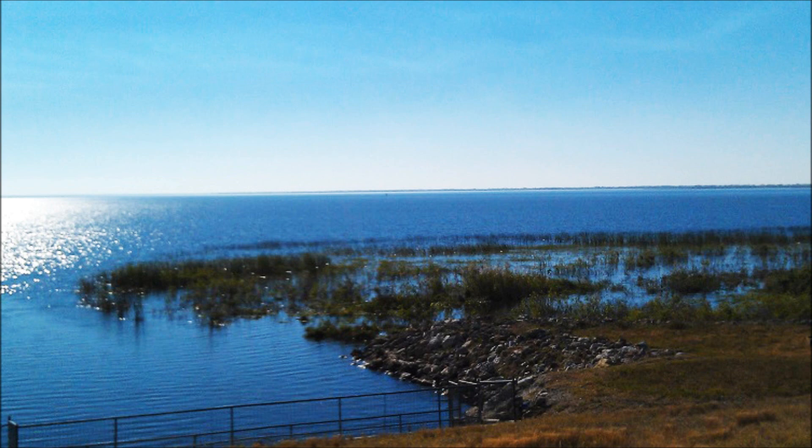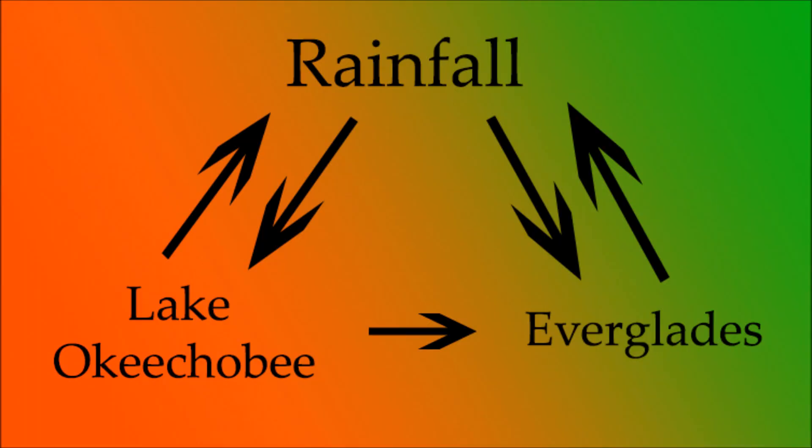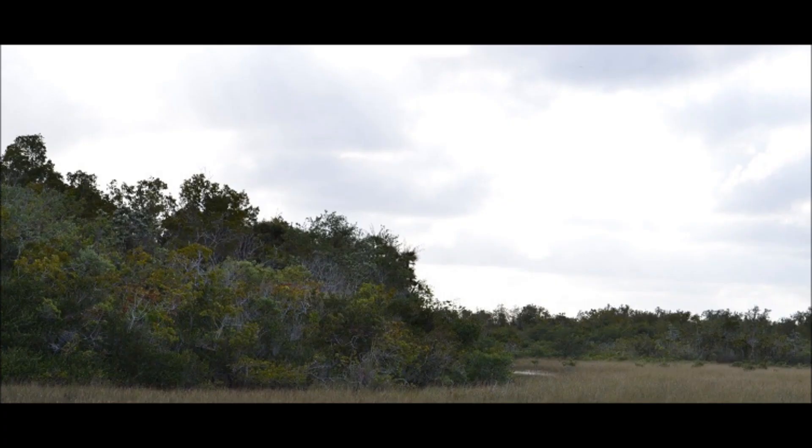The Everglades also gets its water from rainfall. Lake Okeechobee, in turn, gets its water from rainfall as well. Since the Everglades do not drain a lot of water from the lake, and the lake can gather a lot of water from the rainfall, Lake Okeechobee does not lose a lot of water due to the Everglades.